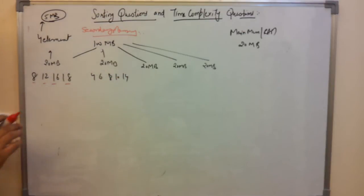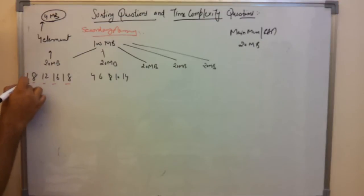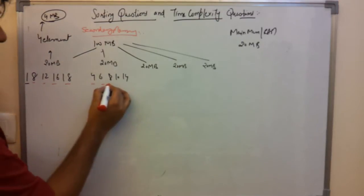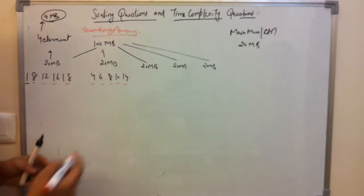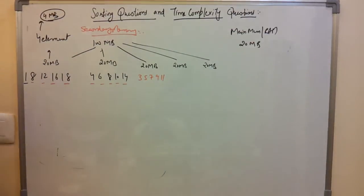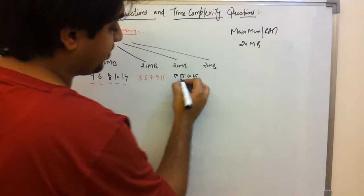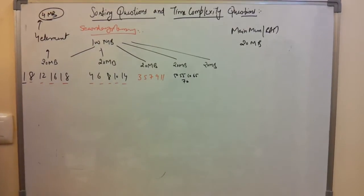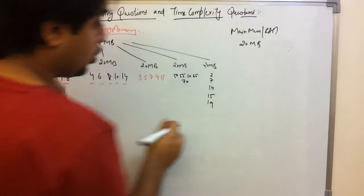Each group has 5 elements in 20 MB, so one element size is 4 MB. The third group has: 3, 5, 7, 9, 11. The fourth group has: 50, 55, 60, 65, 70. The fifth group has: 2, 7, 14, 50, 90. These are our five groups stored in secondary memory.